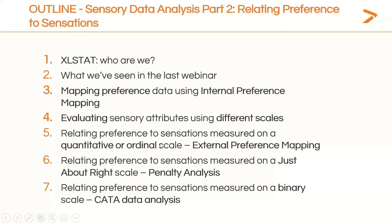With external preference mapping, we'll be measuring attributes on quantitative or ordinal scales. In penalty analysis, we'll be measuring attributes on a just-about-right scale. And in CATA data analysis, we'll be measuring attributes on a binary scale — so presence or absence of the attributes. So these are the four main features we'll be seeing today: internal preference mapping, external preference mapping, penalty analysis, and CATA data analysis.